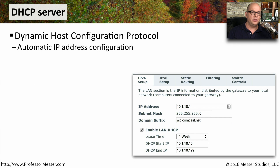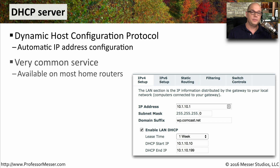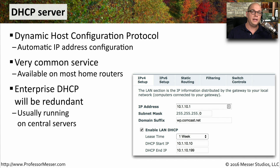One of those servers in a data center is probably a DHCP server. DHCP is the Dynamic Host Configuration Protocol, and it gives automated IP addressing to all devices on our network. This is not just an enterprise service — if you have a home router or wireless router, it's probably running a DHCP service to give all your home devices IP addresses. In the enterprise, you need more than one DHCP server so that if one goes down, a redundant device continues providing IP addresses.